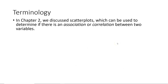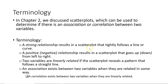In Chapter 2, we discussed scatterplots, which can be used to determine if there is an association or correlation between two variables. When we have a scatterplot that tightly follows a line or a curve, we say that there is a strong relationship. When a scatterplot goes up from left to right, we call that a positive relationship; if it goes down from left to right, we call that a negative relationship. Two variables are linearly related if the scatterplot reveals a pattern that follows a straight line. An association exists between two variables when they are related in some way, and a correlation exists between two variables when they are linearly related.